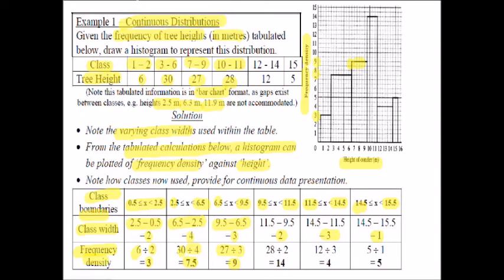With this histogram it's the areas of the bars that relate to the frequency. Going back to the calculations, to work out the frequency for the first category I work out the area under the bar - the class width of 2 multiplied by the frequency density of 3 gives a value of 6, which is the number of trees in the category of height 1 to 2 meters. So the areas of the histogram become the frequency, and we must plot frequency density on the vertical axis. I'll let you consider that slide and go through the calculations again in your own time.